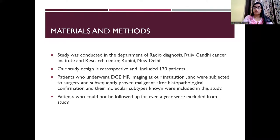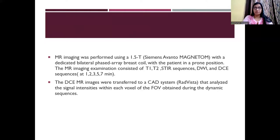Patients who could not be followed up for even a year were excluded from our study. MRI imaging was performed using a 1.5 Tesla Siemens machine with a dedicated bilateral phased array breast coil, with the patient in prone position. The MRI examination consisted of T1, T2, STIR sequences, DWI, and DCE sequences at 1, 2, 3, 5, and 7 minutes. The DCE MR images were transferred to a CAD system, ZATWISTER, which analyzed the signal intensities within each voxel of the FOV obtained during the dynamic sequences.